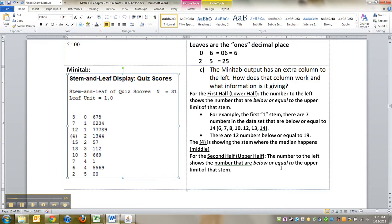which would be all the ones that are past the parentheses. Then the number to the left shows the number that are above or equal to the lower limit of the stem. So let me give you some examples here.